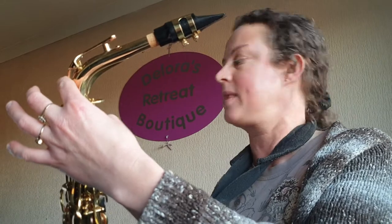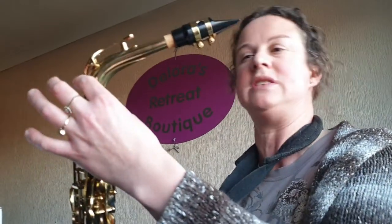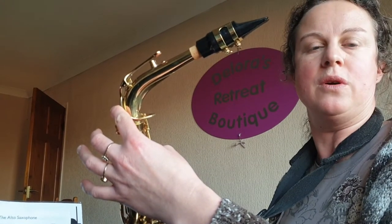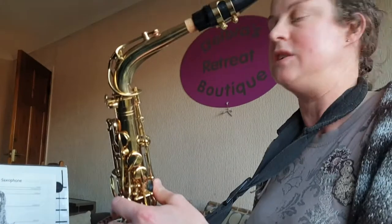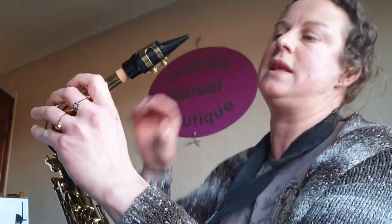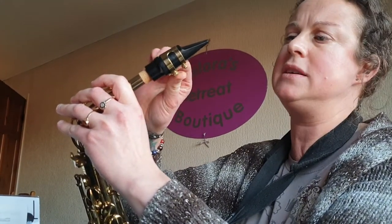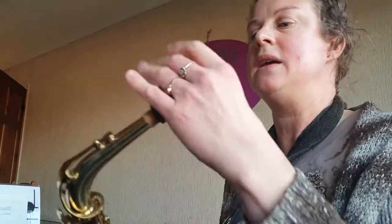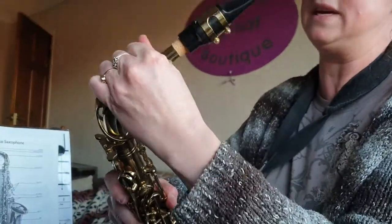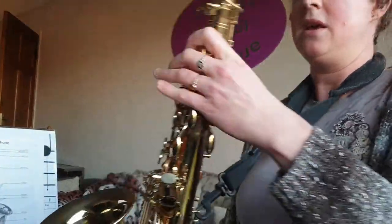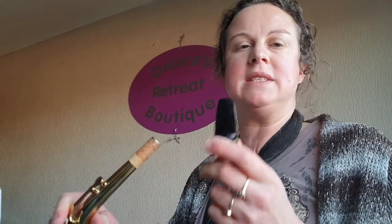So: the mouthpiece has a reed on it, disinfected before use. This is a ligature which holds the reed in place. Then you have the neck of the saxophone, which has the octave key — that changes the lower notes to the higher notes. When you press this, using the same fingerings on the saxophone, you can go from low to high. You've got the key screw here which holds the reed in place — don't do that too tight, just enough to hold it so you can still play.